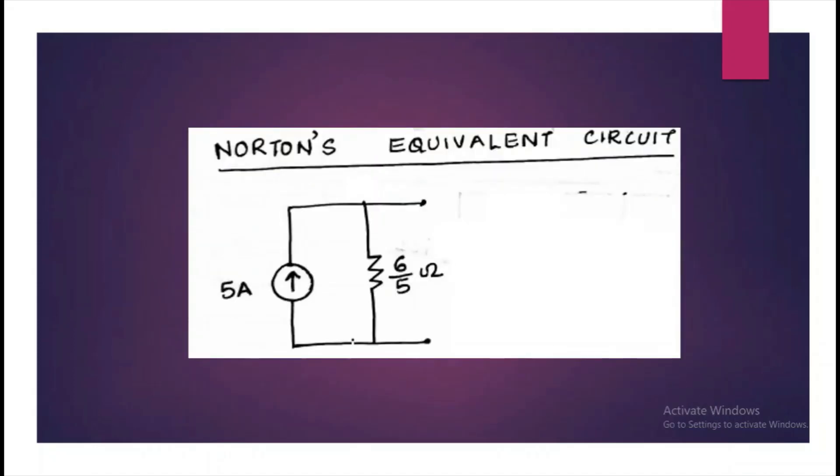So this is the equivalent Norton circuit with the 5 ampere current source which is in parallel with the equivalent resistance which is 6 by 5 ohm.